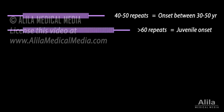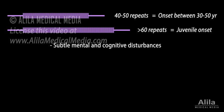An average person with 40 to 50 CAG repeats in the HTT gene usually develops symptoms in their 40s. People with more than 60 repeats may start to show signs of the disease in their childhood. The first signs are subtle mental and cognitive disturbances that may go unnoticed.